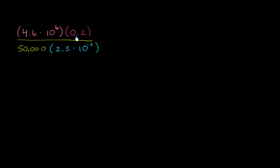This part right over here, 0.2, is not in scientific notation. In order for it to be scientific notation, it would have to be some number between 1 and 10 (not including 10), multiplied by some power of 10. This is clearly less than 1. But this is in the tenths place — it's 2 times 1 tenth. 1 tenth is 10 to the negative 1, so this is the same thing as 2 times 10 to the negative 1.